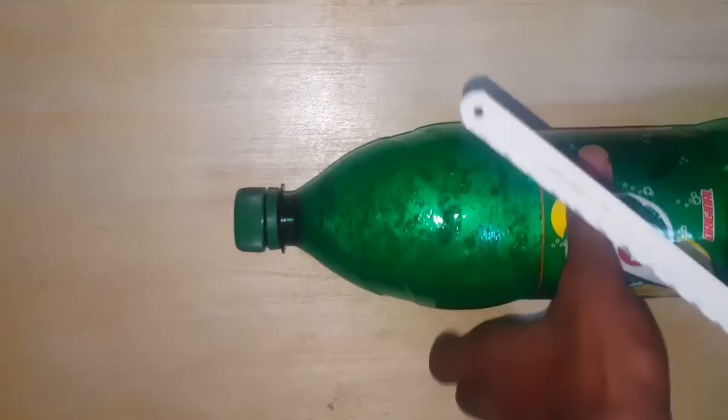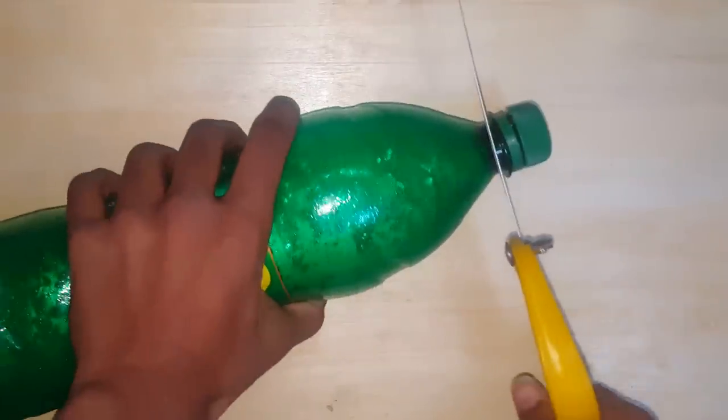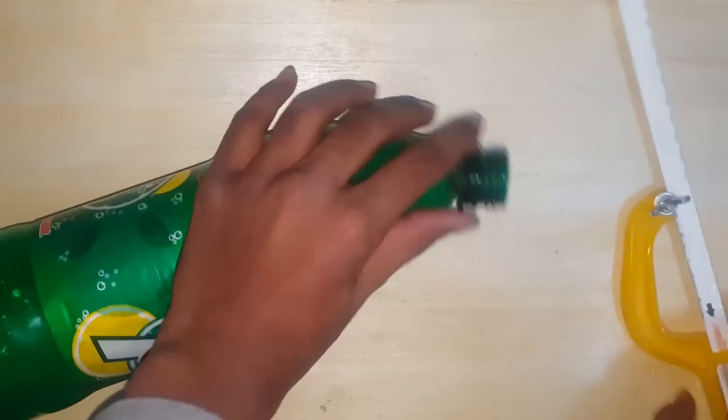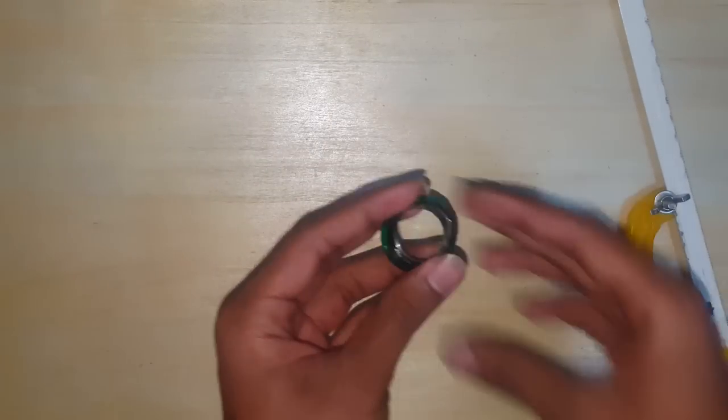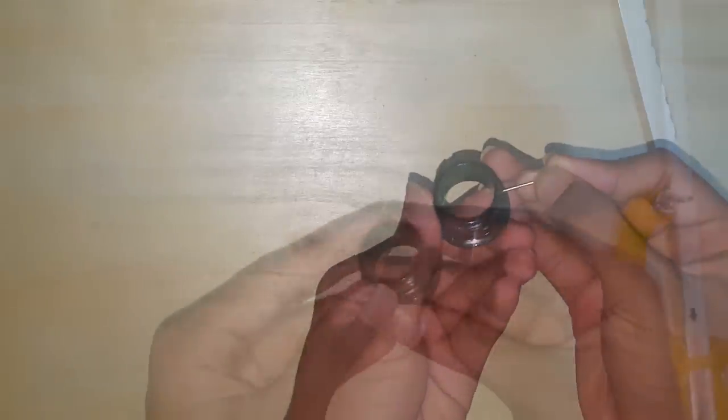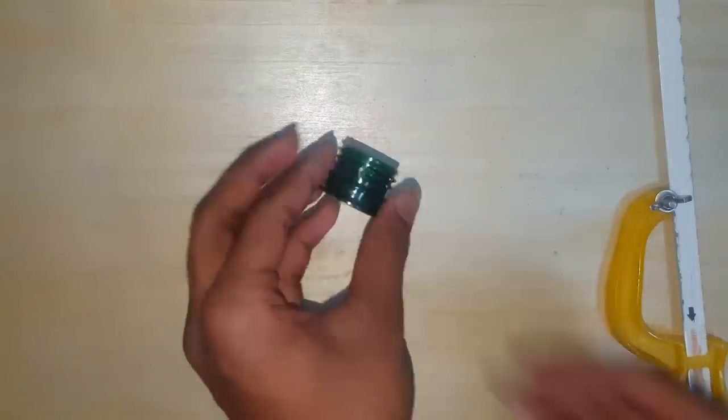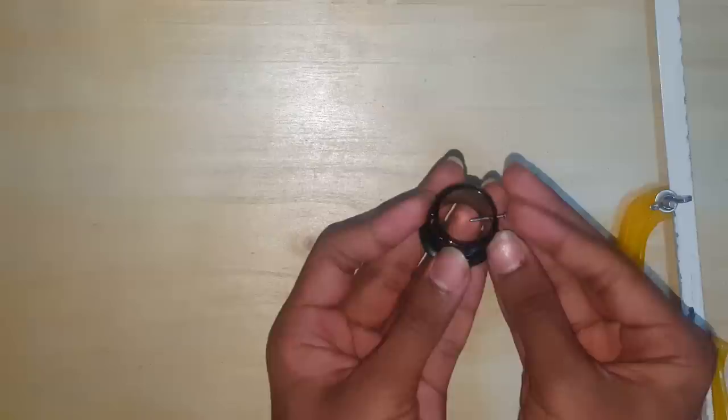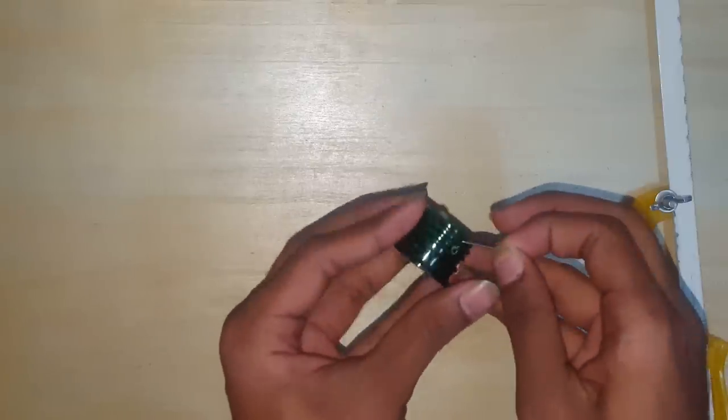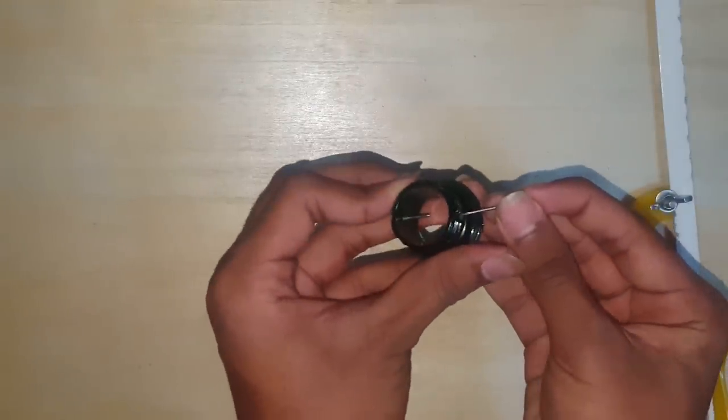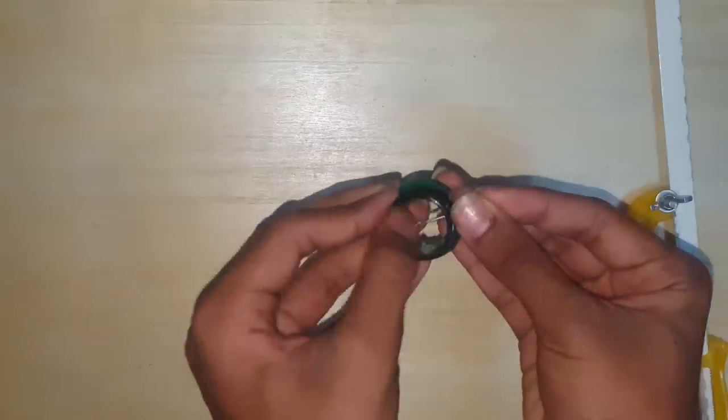Now we're gonna make the spark gap for our Tesla coil. For that, take a bottle—you can use any soda bottle—and cut off its head. Once you've cut it, make two holes opposite to each other. We're gonna use it to insert nails inside it. So here I have drilled two holes opposite to each other. Now insert the nails inside it. Now these two nails will function as a spark gap.